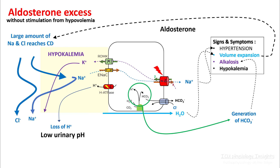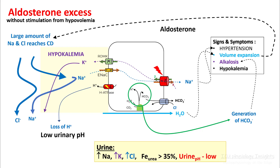In patients with aldosterone excess, since their volume is expanded, sodium and chloride absorption in the PCT is not optimal. So a large amount of sodium and chloride reaches the collecting duct. Some of this sodium is absorbed in the collecting duct due to aldosterone stimulation, but still most of the sodium would be lost. Therefore, urine would have high sodium, high potassium, high chloride. FEurea will be more than 35% and urine pH would be low.